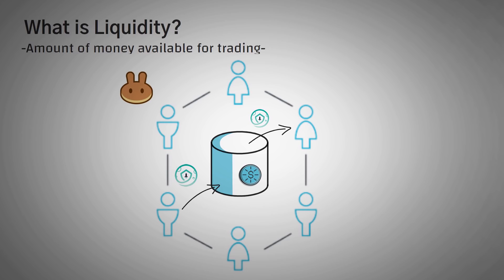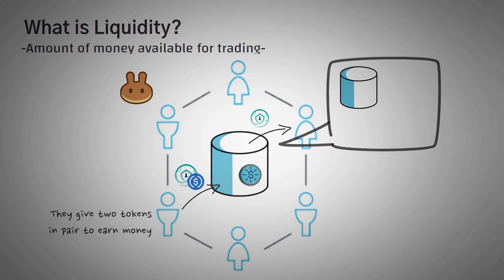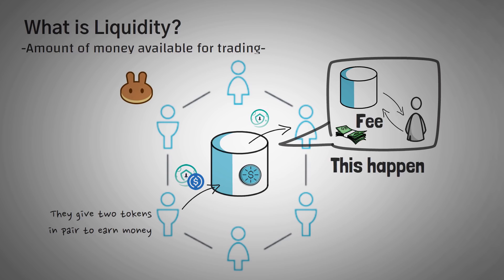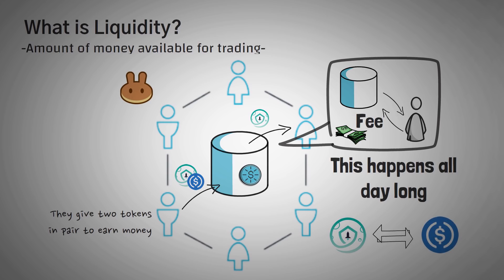The people who actually give PancakeSwap their tokens technically give two tokens in a pair, like SafeMoon and USDC. They do this because they can earn a small fee that traders pay to make trades between these two tokens. So all day long, traders come to PancakeSwap and trade SafeMoon for USDC, and other traders trade USDC for SafeMoon, but they're using the liquidity that someone else provided.